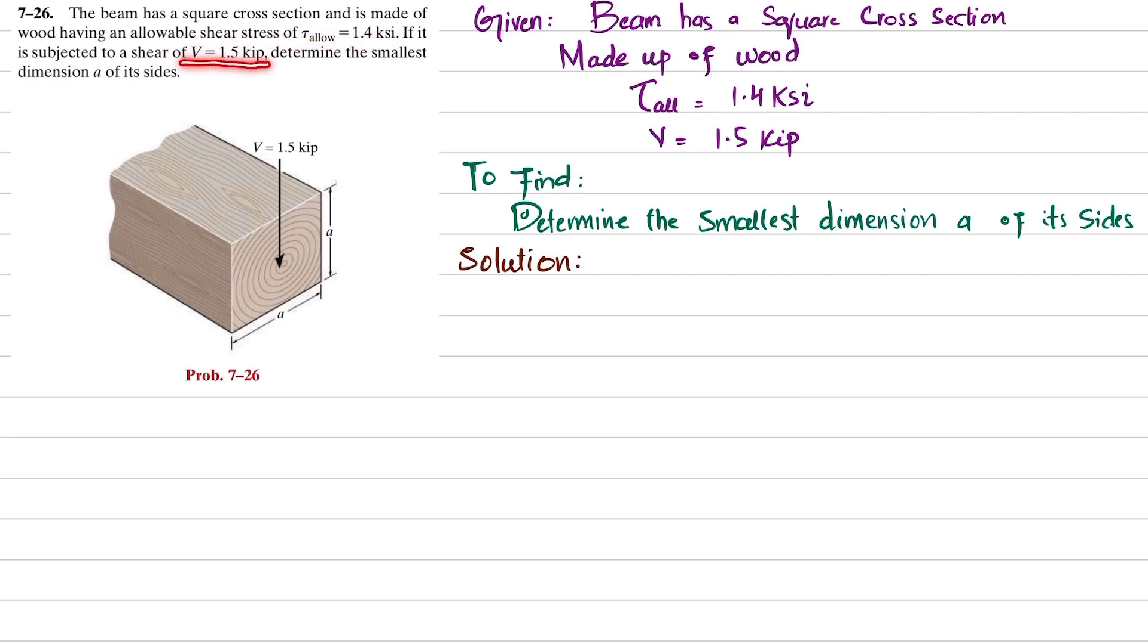You can see this is the beam having square cross section. One of its width is a and height is also a, and it is applied to a shear of 1.5 kips. The allowable shear stress is given as 1.4 ksi, so you have to find the smallest dimension a of its sides.